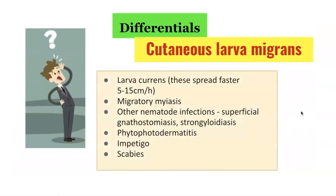The differential diagnosis of cutaneous larva migrans includes the following: larva currens, which tends to spread faster at 5–15 cm per hour; migratory myiasis; other nematode hookworm infections; phytophotodermatitis; impetigo; and scabies. It is interesting to note that in the human species of intestinal hookworms, these penetrate the skin to cause an itchy, pruritic, non-specific localised rash, which lasts 1–2 weeks and is referred to as ground itch.